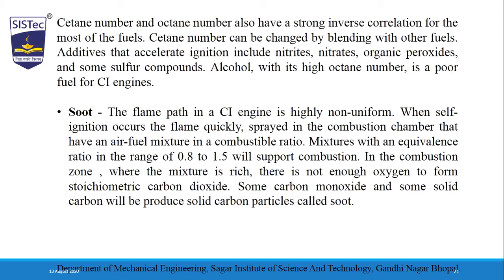CTN numbers can be changed by blending — mixing diesel with another type of oil or fuel of different properties. These blending agents are called additives. These additives accelerate ignition because they include nitrates, organic peroxides, and some sulfur compounds. Alcohol, with its high octane number, is a poor fuel for a CI engine.